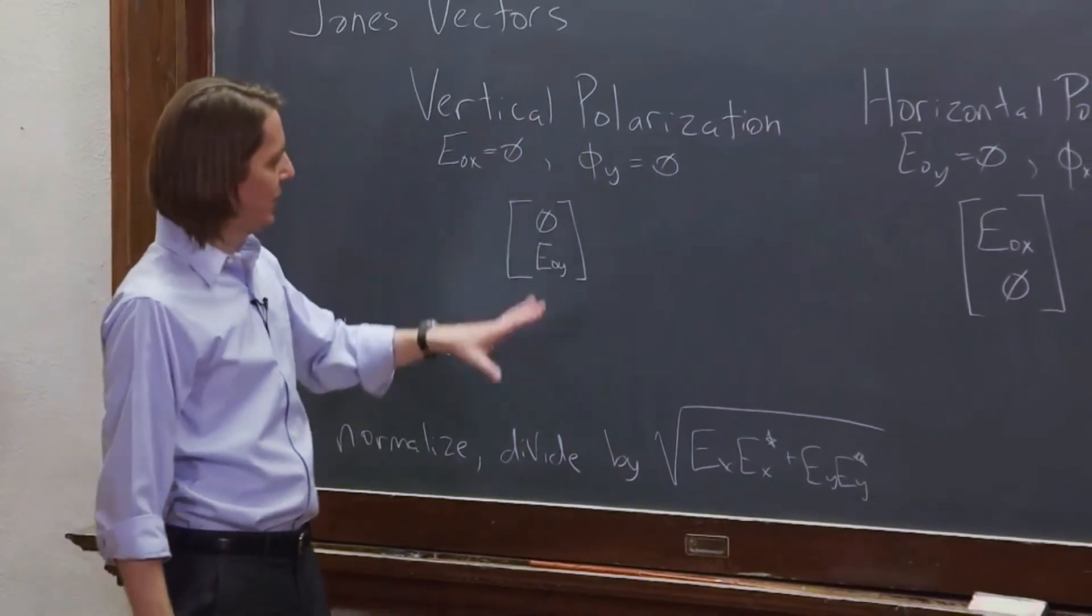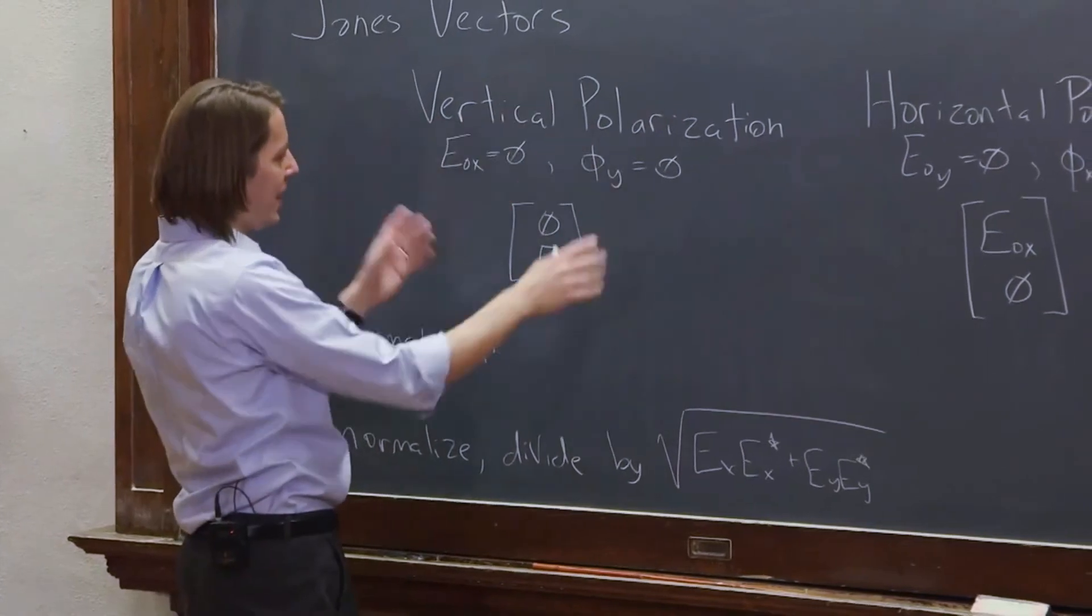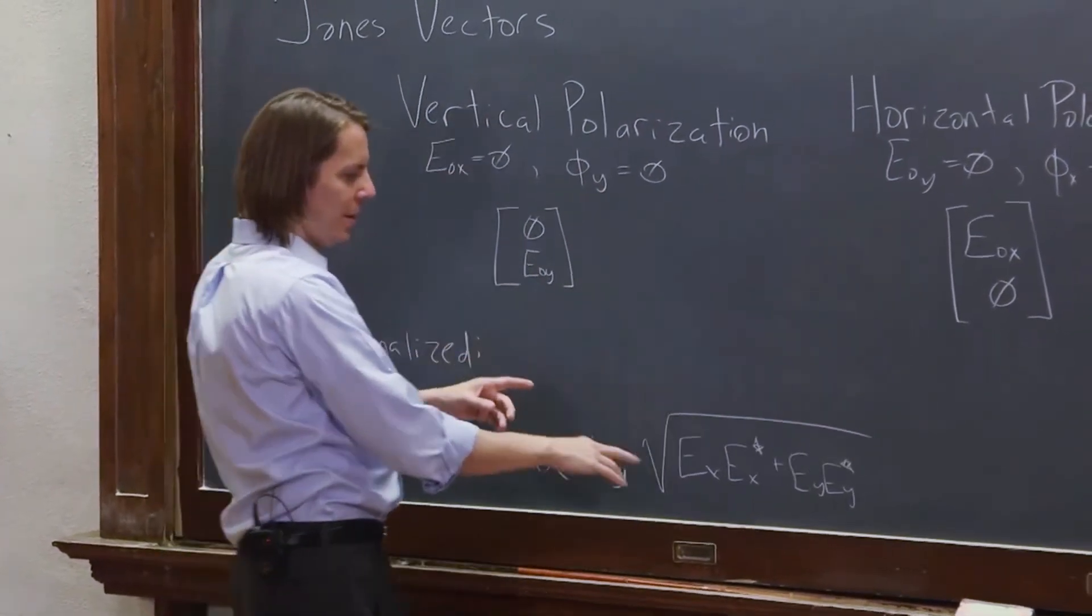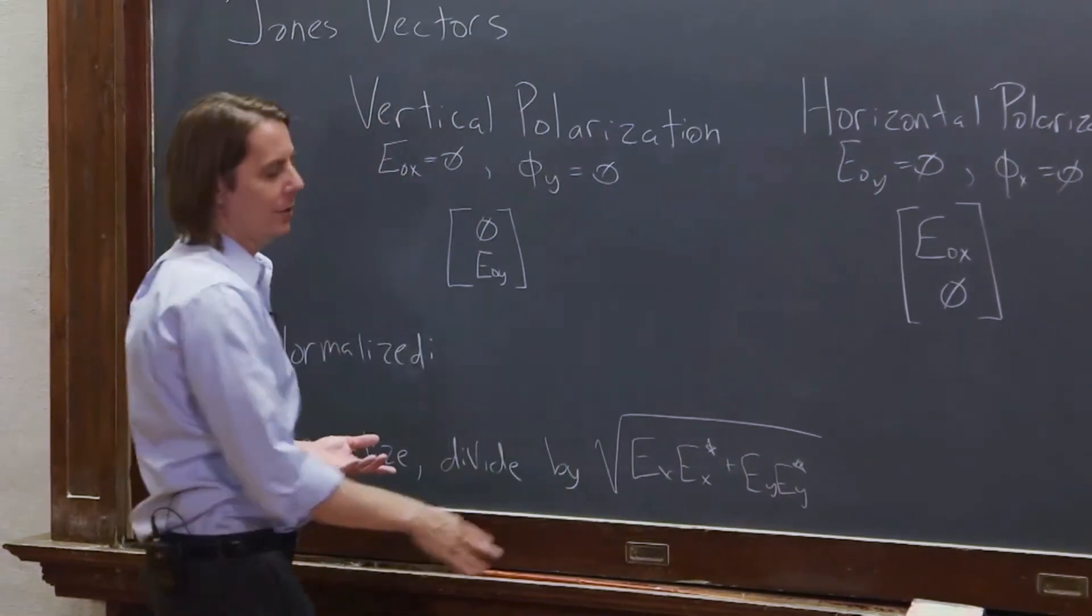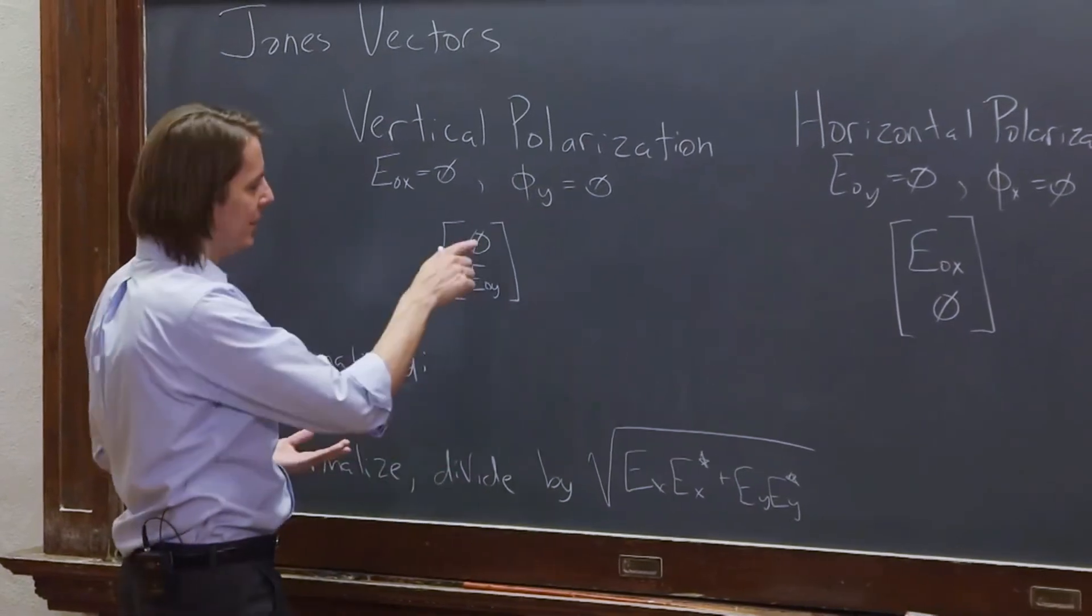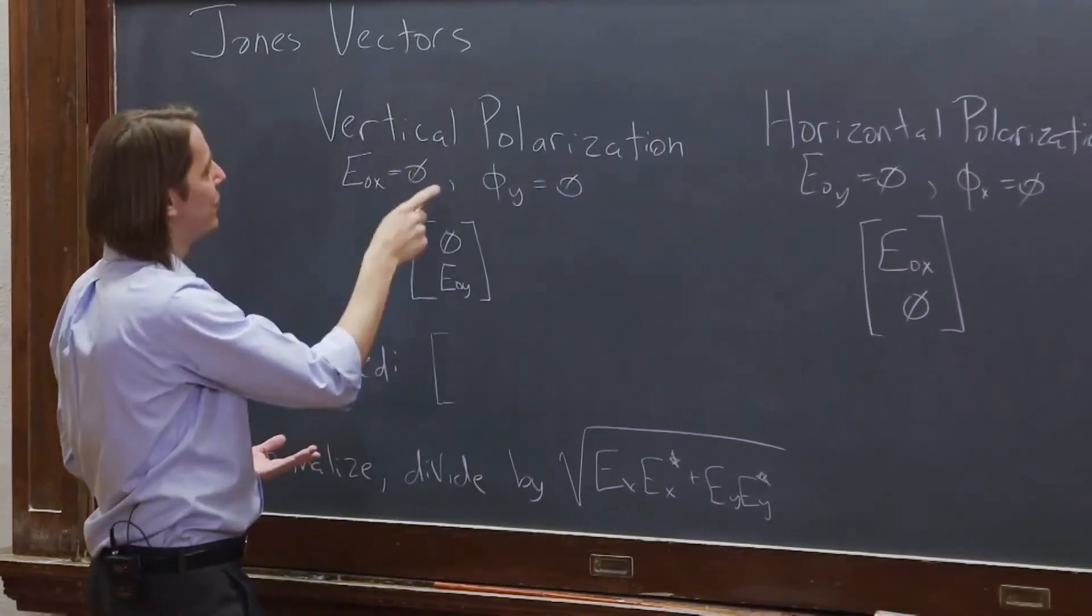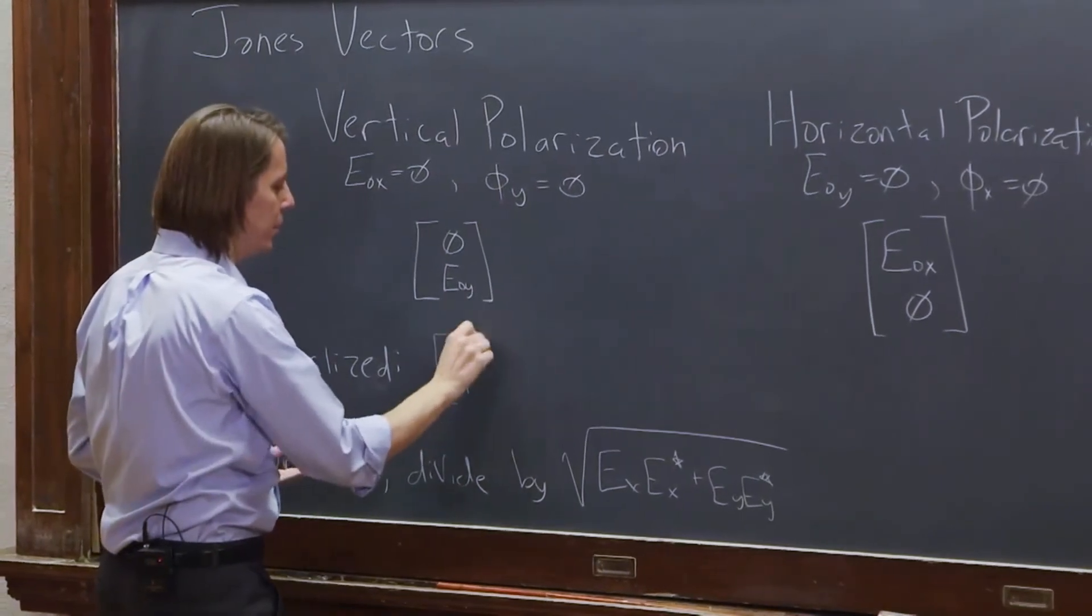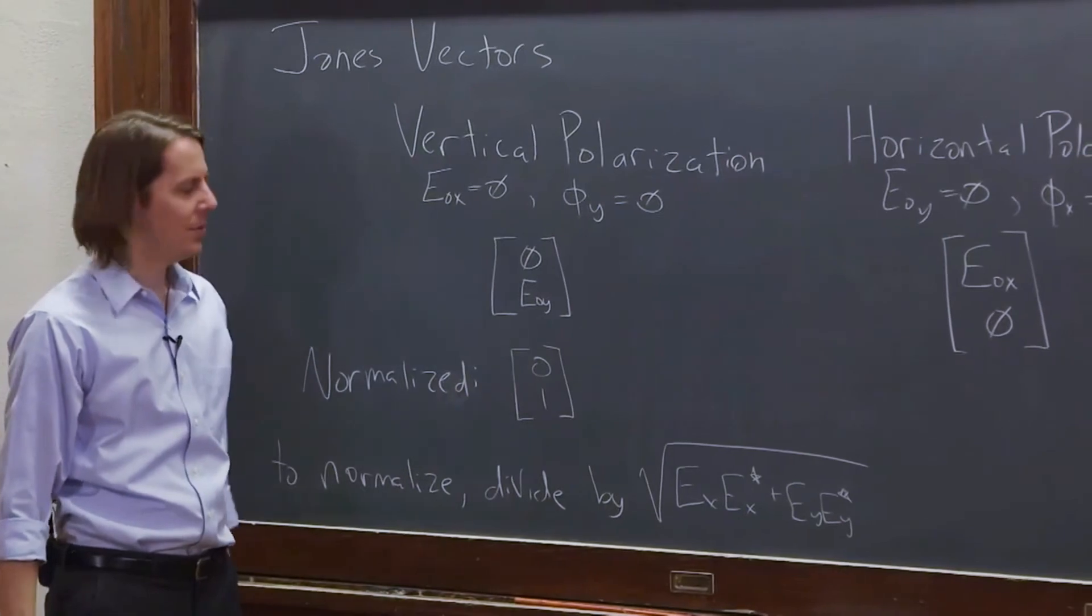So if you look at it, we can kind of do it quickly in our heads, because most of it is zero. If the only amplitude here is E not y, then that's all zero. And if it's just a real number, then it's just E not y squared. And the square root of E not y squared is E not y. So if you divide it by E not y, then that's still zero and that's one. So the normalized Jones vector for vertical polarization is zero one, which isn't too surprising because the lower number is for vertical.